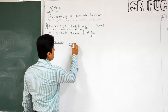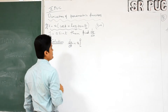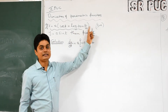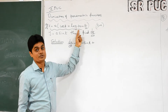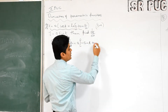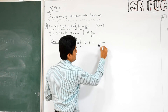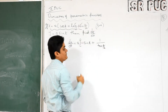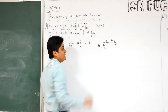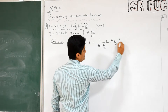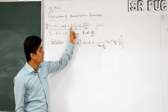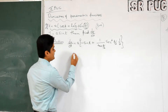Now, what is dx/dt? 'a' is constant. The differentiation of cos(t) with respect to t is minus sin(t), plus log of tan(t/2). This is a composite function, so you should use the chain rule. The outermost function is log; differentiation of log gives 1 over tan(t/2). Then differentiation of tan gives secant squared. Last, don't forget the differentiation of t/2, which is 1/2. So three functions you differentiate: log, tan, and t/2.